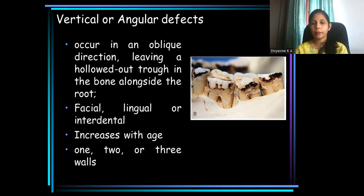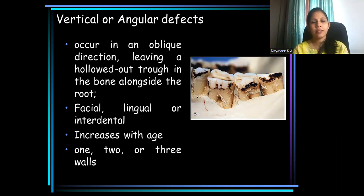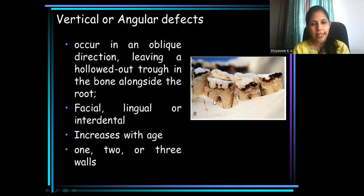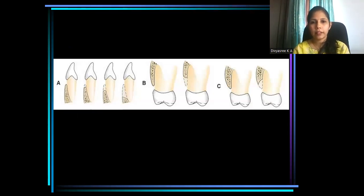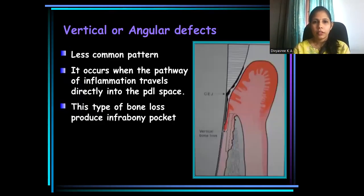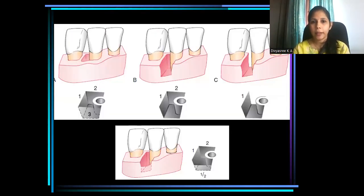Now we have the vertical bony defect or angular defects. Such defects usually occur in an oblique direction, thereby leaving a hollowed-out trough in the bone along the root. They are seen on the facial aspect, on the lingual aspect, or even in the interdental areas. They have been found to have different architecture.